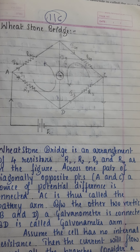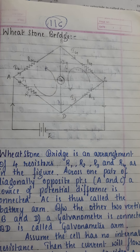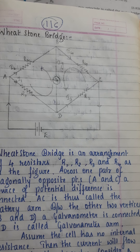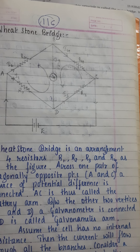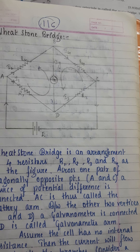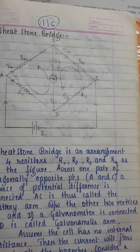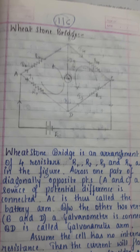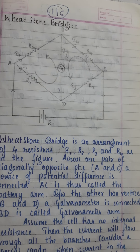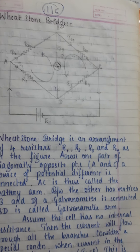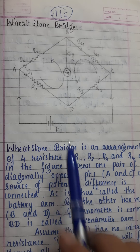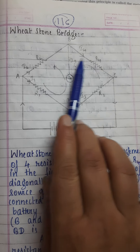According to the junction rule, total current at any junction will be zero. And the loop rule states that total potential difference in a loop will be zero. We will use these rules to solve the Wheatstone Bridge.